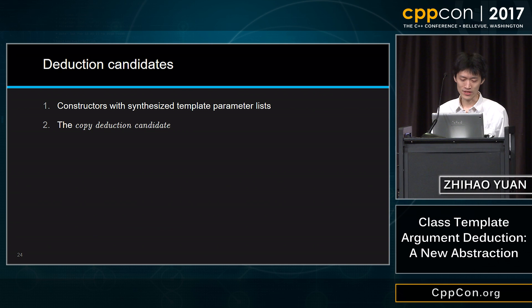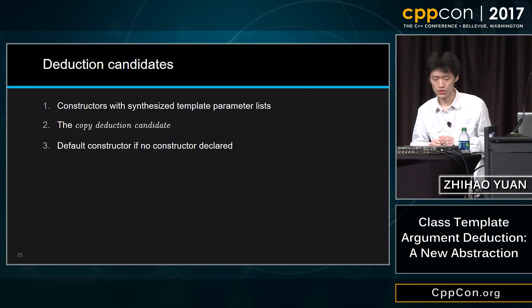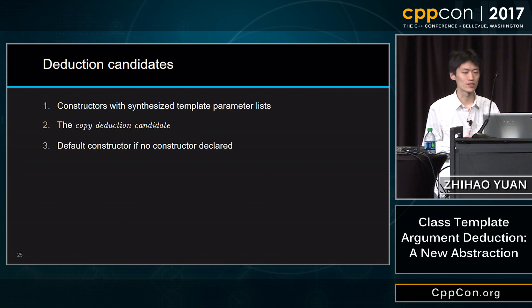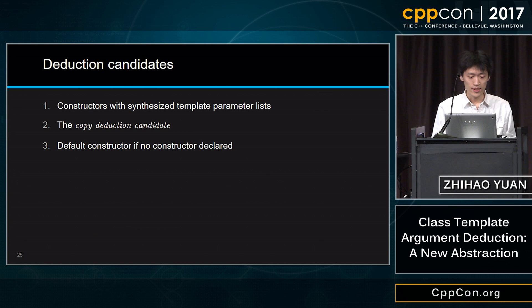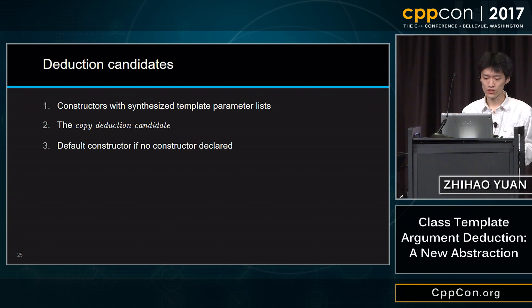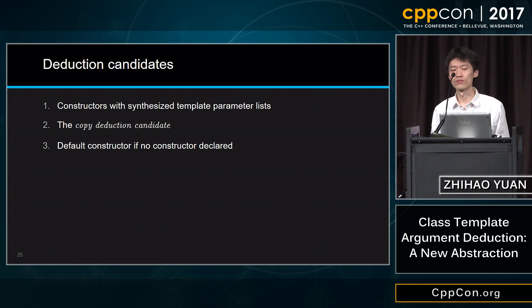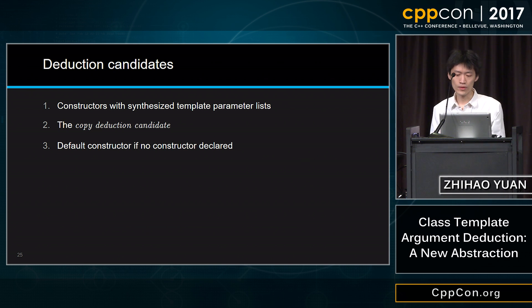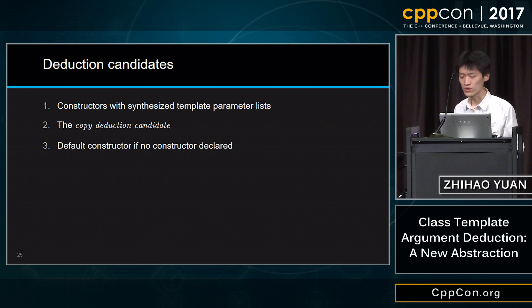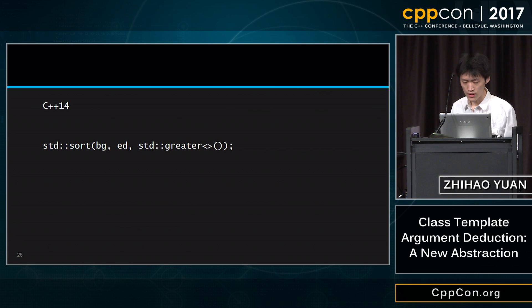The third kind of deduction candidate is the default constructor. It simulates the behavior of a generated default constructor, for if you do not declare any, but they're a little bit different. In C++14, we added transparent comparators, so when writing algorithms you can say `less<>` — the diamond operator, which is just an empty class template argument list — and it will use a default template argument of `void`. But now with class template argument deduction, we can eliminate this diamond, giving us something very similar to Sean Parent's SL library. I love it.